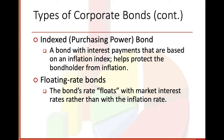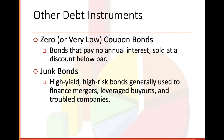There are also floating rate bonds — the bond's rate floats with market interest rates rather than with the inflation rate. Other debt instruments: zero or very low coupon bonds — bonds that pay no annual interest, sold at a discount below par. Junk bonds — high yield, high risk bonds generally used to finance mergers, leveraged buyouts, and troubled companies. Junk bonds usually have high yield, but high risk.